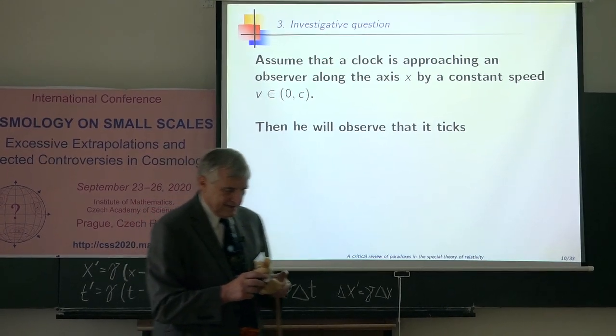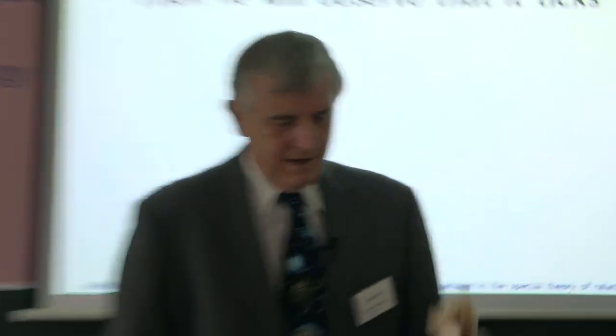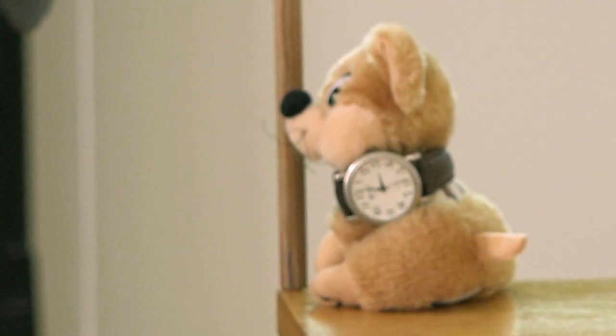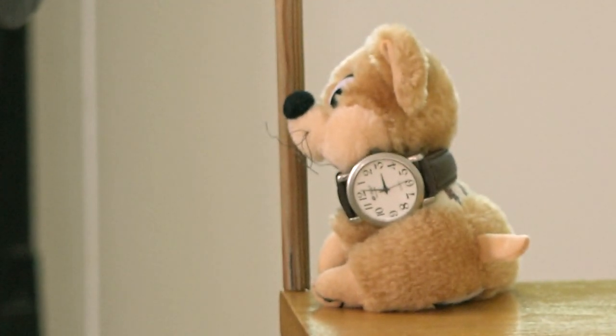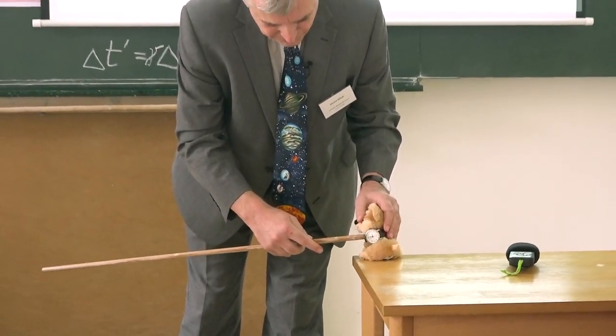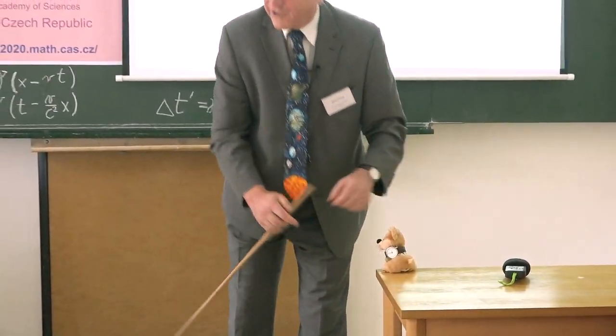If you substitute this v to here, you end up with 5 over 3 delta t. And now I have investigative questions to you. Assume that this is our observer, which sits at the origin of the system S, at z axis. He has very precise watch, atomic watch.